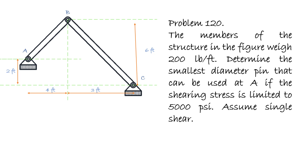We assume single shear. So we are to determine the smallest diameter that can be used at A. In order to solve for that diameter of the pin, we have to solve for the reaction at pin A first, since we are focusing at pin A. We have here the FBD of the structure.